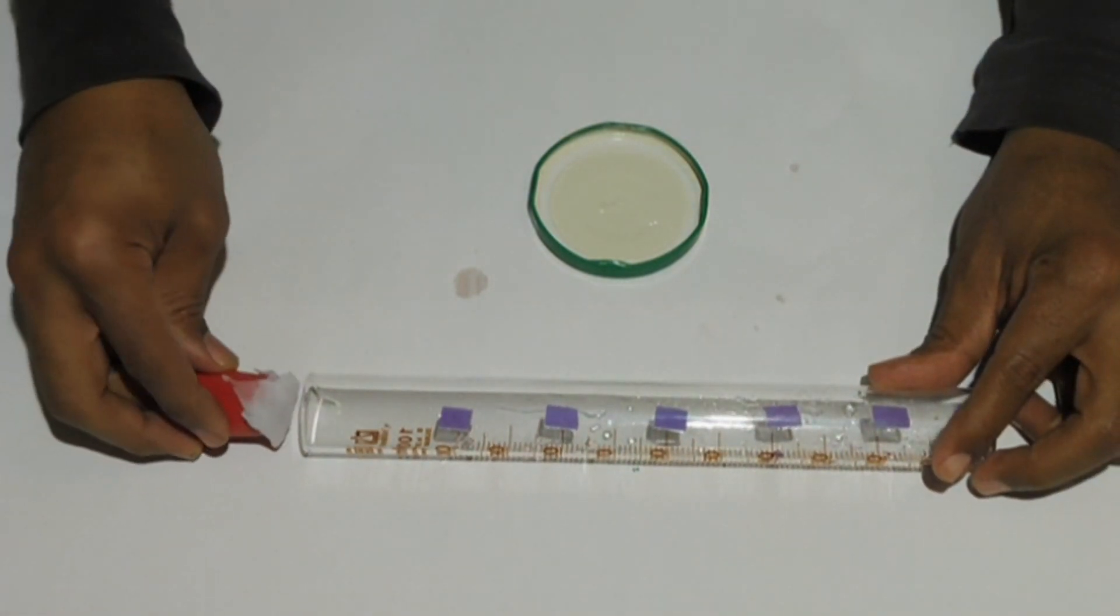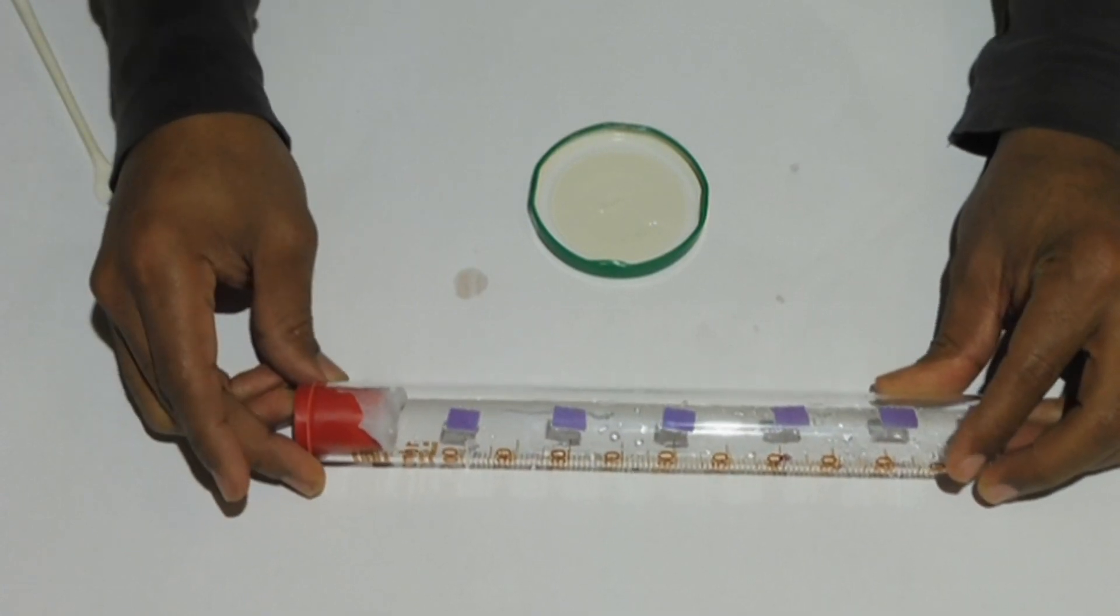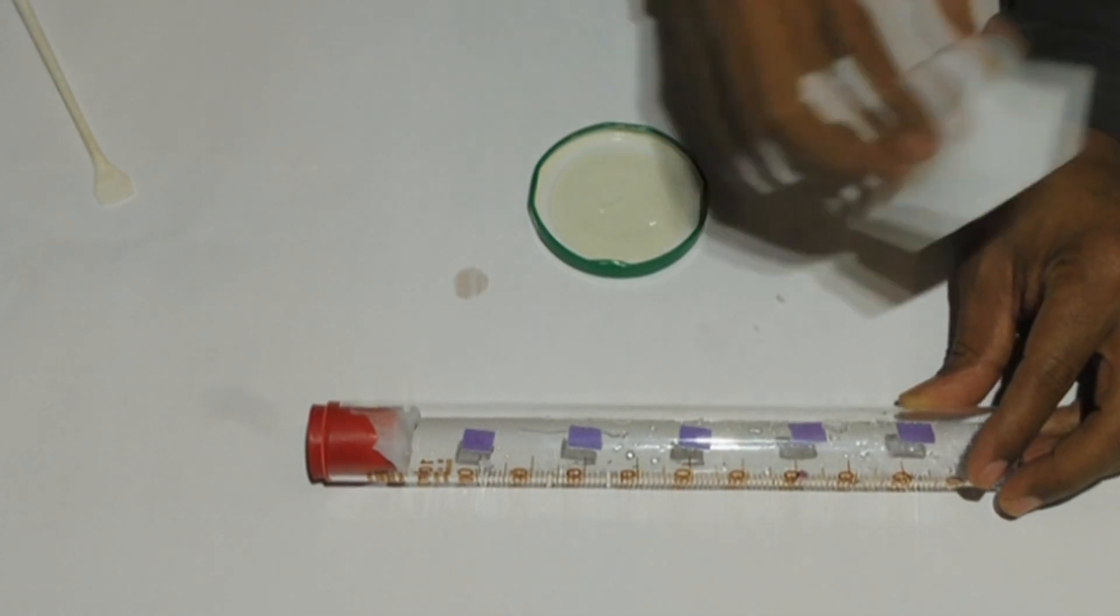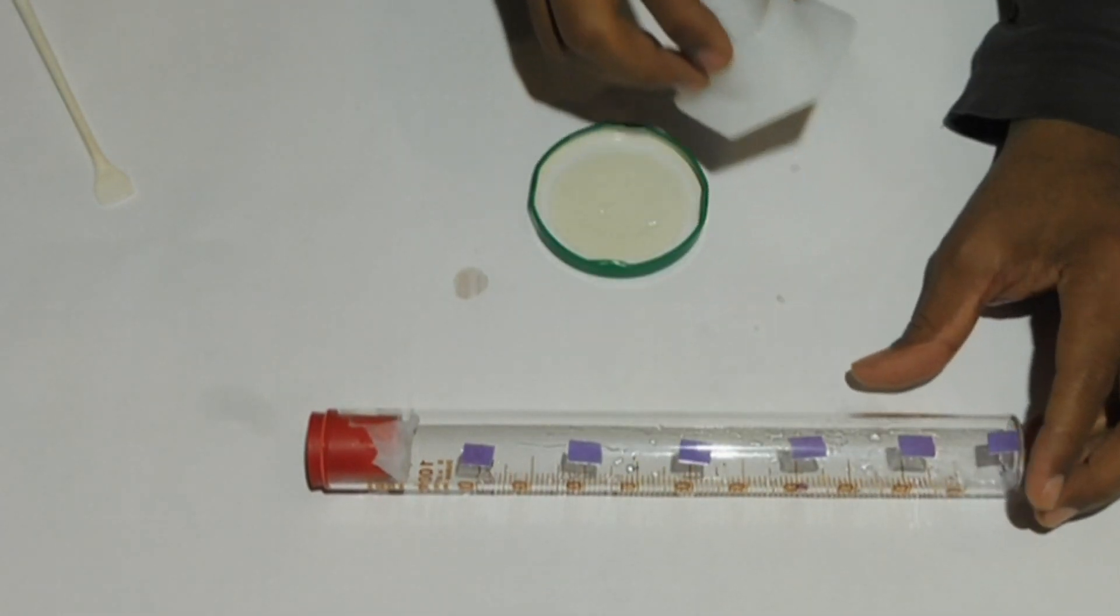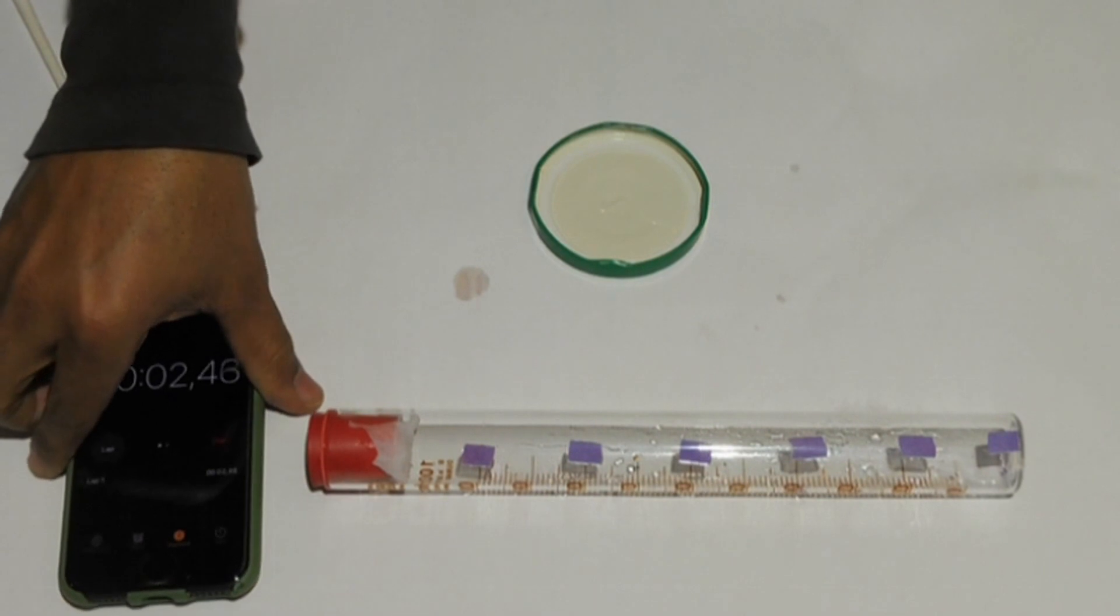Gently close the open end of the cylinder with a rubber stopper. If the cylinder rolls, find means to keep it from moving. Start the timer as soon as the cylinder is closed. As for this time, do not disturb the setup until the end of the experiment.